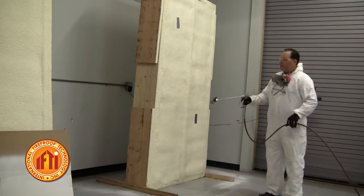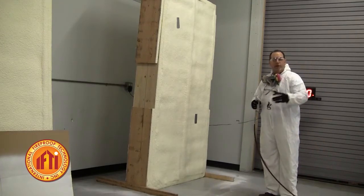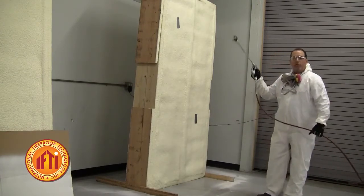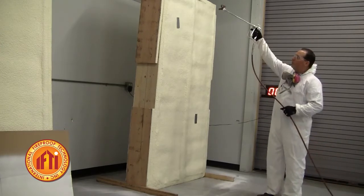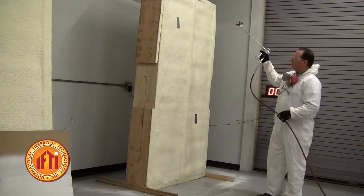So whenever you're setting up to spray, you can use various length of wands on your guns to get the reach you need. You want to make sure you have adequate reach because you want to make sure your mill thickness is consistent.